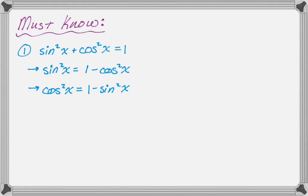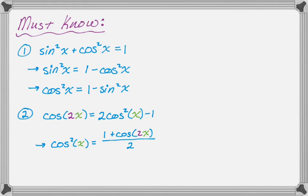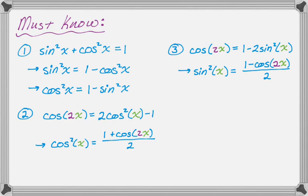A second thing you need to know is that cosine of 2x equals 2·cos²x − 1. We don't use it that way either — we rearrange it and solve for cosine squared: cos²(something) = (1 + cos(2·that thing)) / 2. You might also use cosine(2x) = 1 − 2·sin²x, rearranged to: sin²(something) = (1 − cos(2·that thing)) / 2.